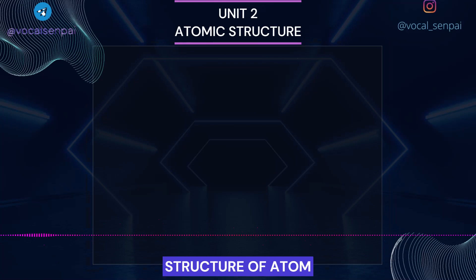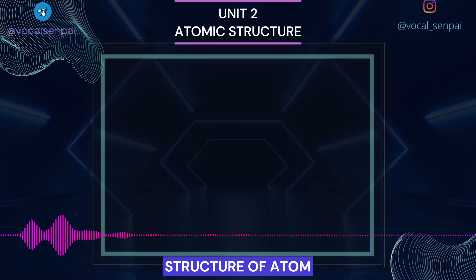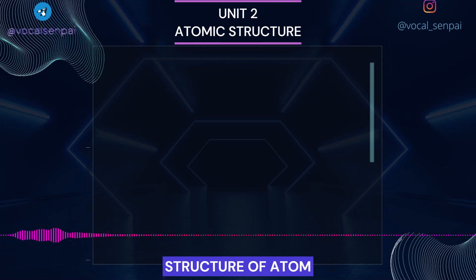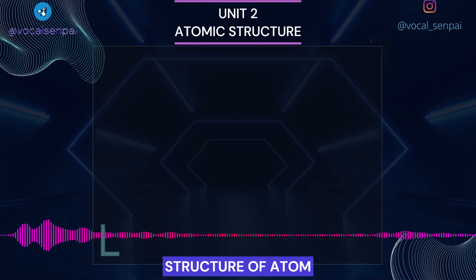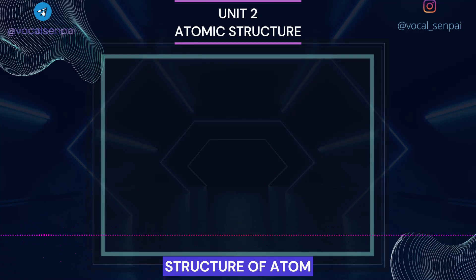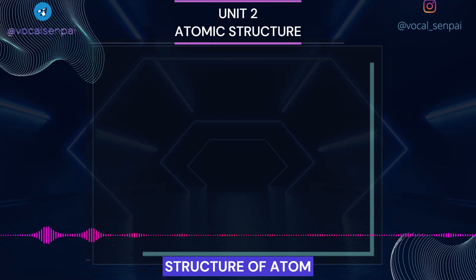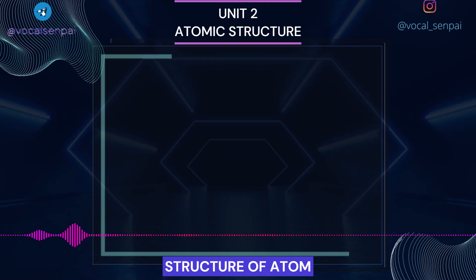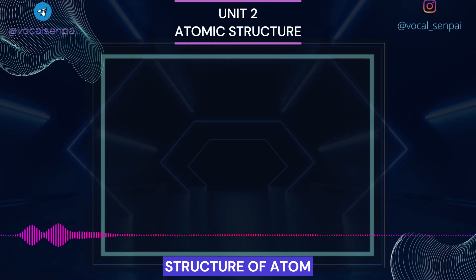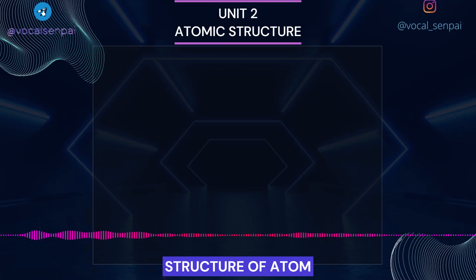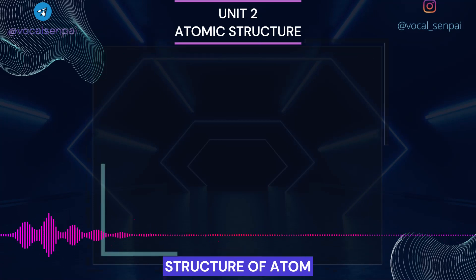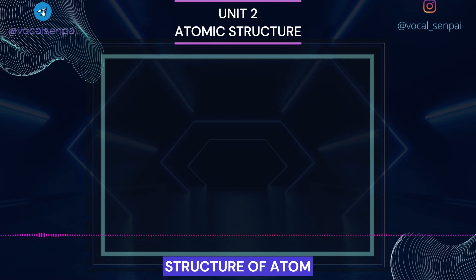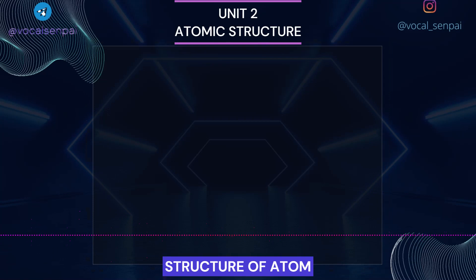Structure of Atom. The existence of atoms has been proposed since the time of early Indian and Greek philosophers around 400 BC, who were of the view that atoms are the fundamental building blocks of matter. According to them, the continued subdivisions of matter would ultimately yield atoms which would not be further divisible. The word atom has been derived from the Greek word 'atomio' which means uncuttable or non-divisible. These earlier ideas were mere speculations and there was no way to test them experimentally. These ideas remained dormant for a very long time and were revived again by scientists in the 19th century.